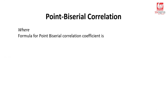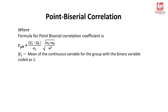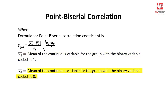Let's talk about the mathematical expression for a point bi-serial correlation coefficient. Y1-bar is the mean of the continuous variable for the group with the binary variable coded as 1, and Y0-bar is the mean of the continuous variable for the group with the binary variable coded as 0. We have one categorical variable with two levels — 0 and 1 — and a numerical variable. We filter the data for the ones and calculate an average of the corresponding continuous variable values. Similarly, Y0-bar represents filtering the data for zeros and taking an average of the corresponding continuous values.